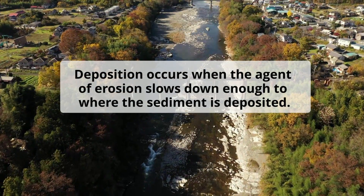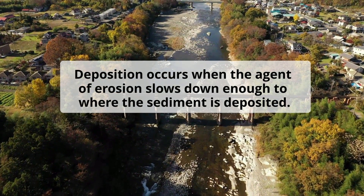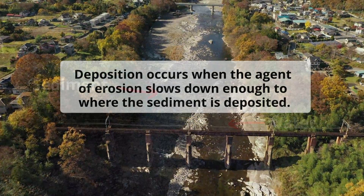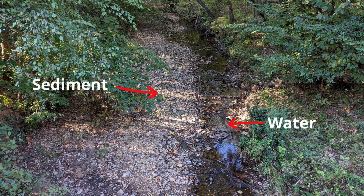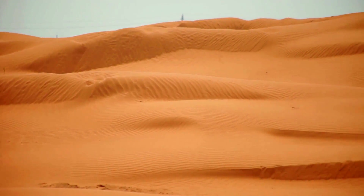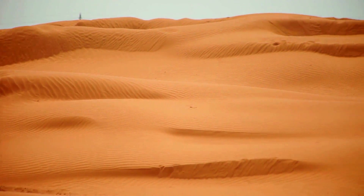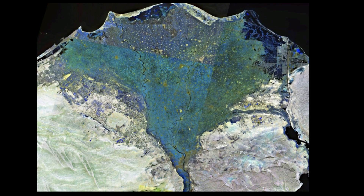Deposition occurs when the agent of erosion slows down enough to where the sediment is deposited. In this picture, you can see an example of deposition. The water has slowed down and the rock and pebbles have been deposited. These sand dunes were created by deposition of wind. This river delta was created by the deposition of a river.